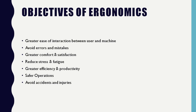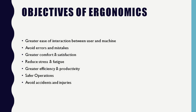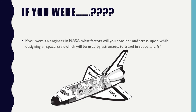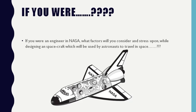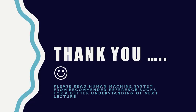This covers human, machine, and environment components and their relation to ergonomics. Before closing, here is something to enhance your curiosity: if you were an engineer at NASA, what factors would you consider and stress upon while designing a spacecraft to be used by astronauts traveling in space? Please read the human-machine system from recommended reference books for better understanding of the next lecture. Thank you.